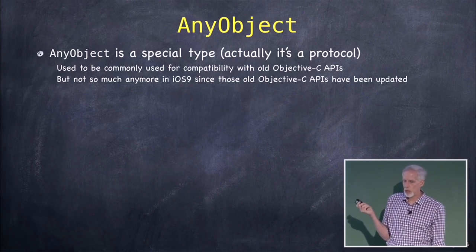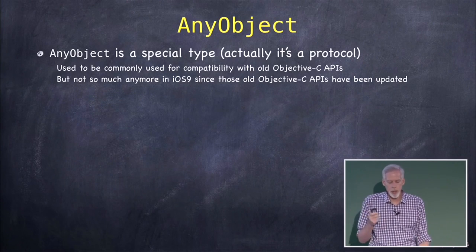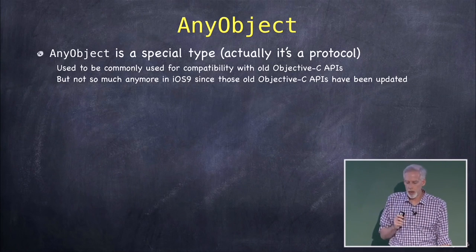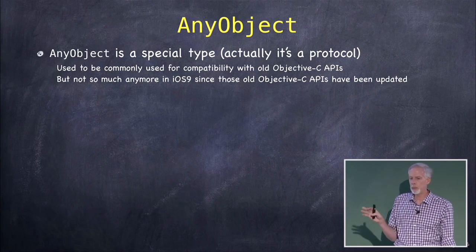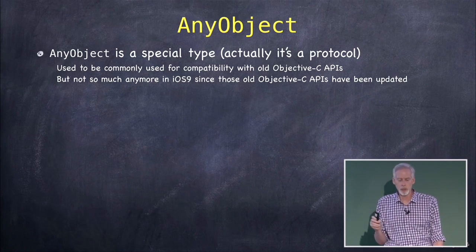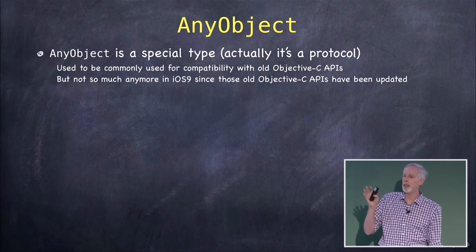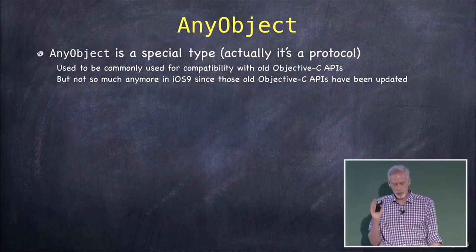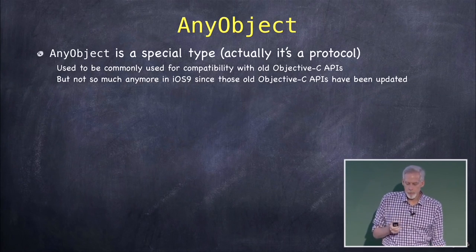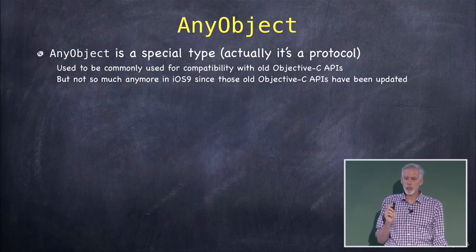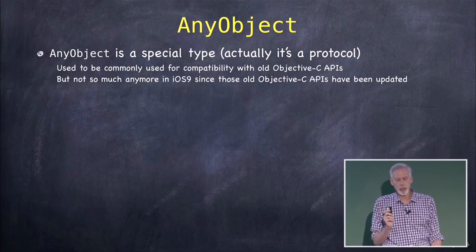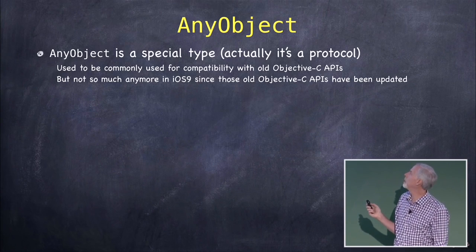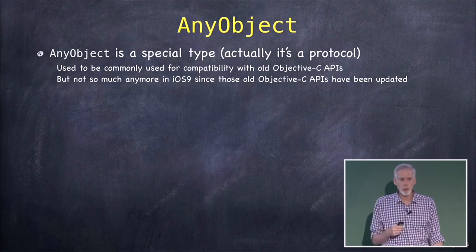Any object is a special type — it's actually a protocol, but you can think of it as a type. It is used commonly, or used to be, for compatibility with Objective-C APIs.